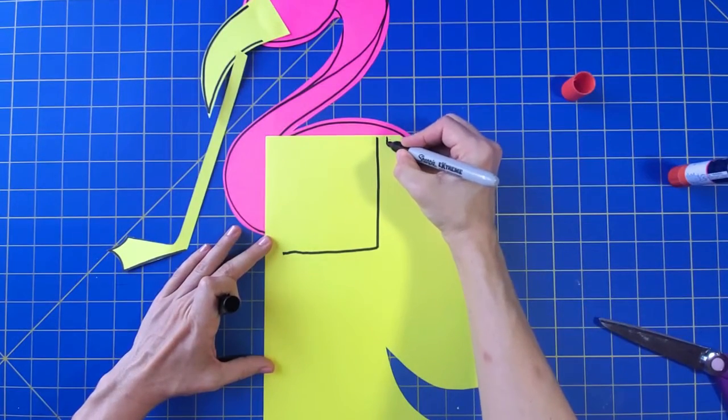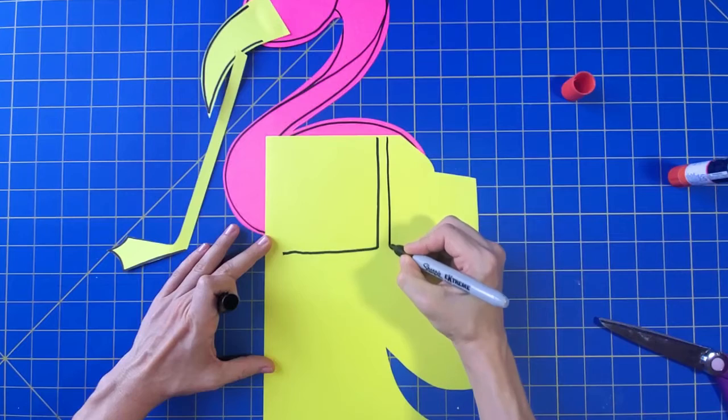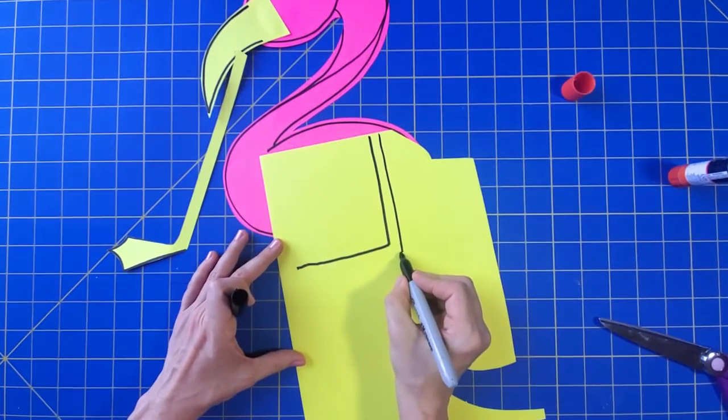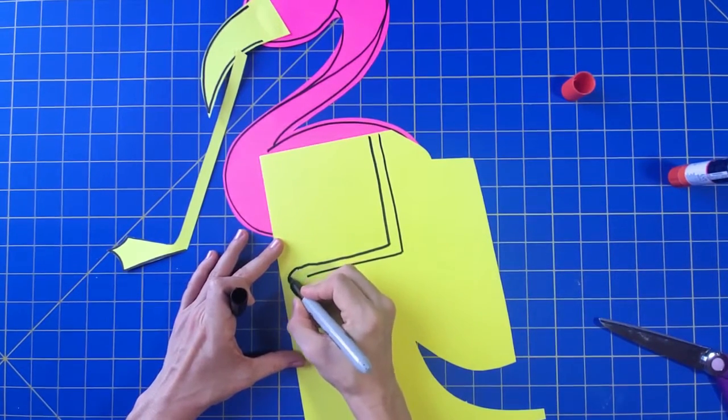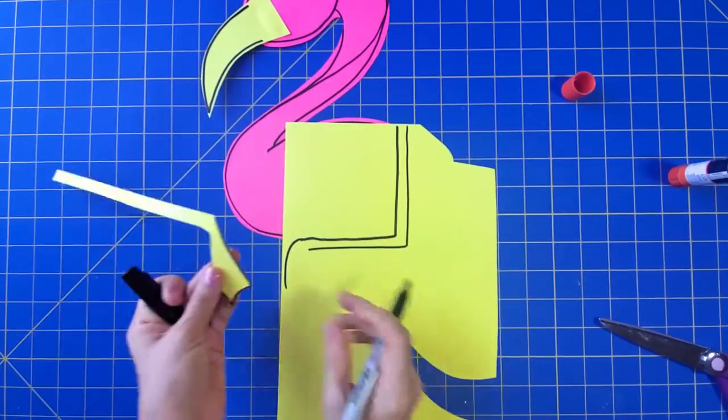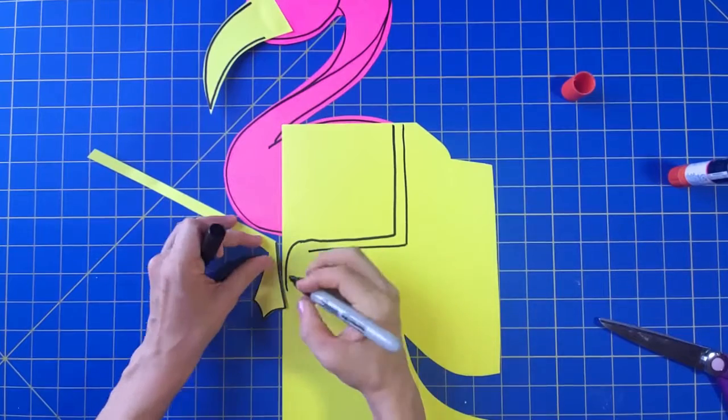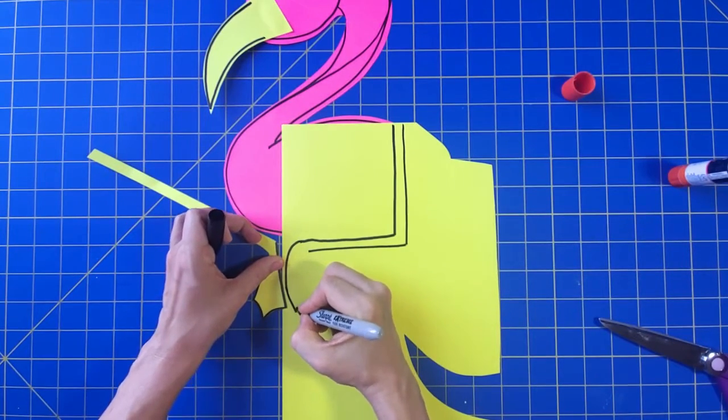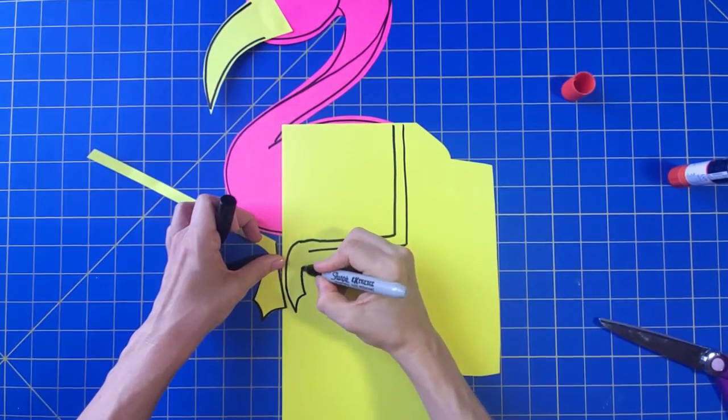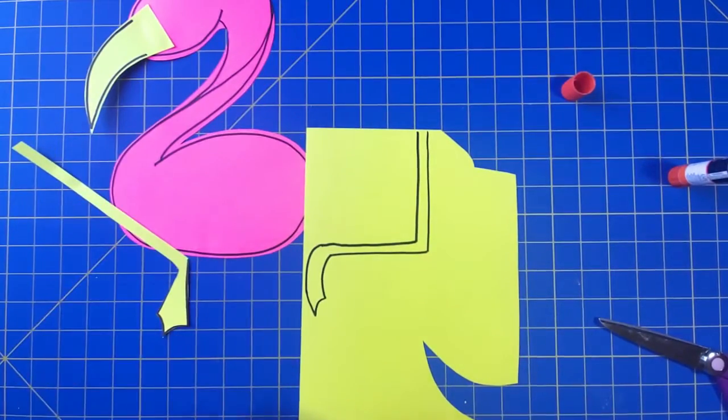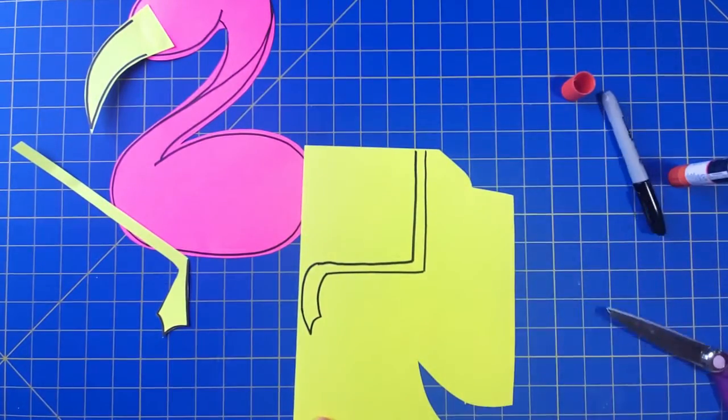Then I'm going to draw the other side of the leg. I'm going to draw it skinnier this time because I didn't like the way it looked the first time. The foot kind of comes down like this, and I want to make sure it's the same size as my other foot. It'll look something like that.